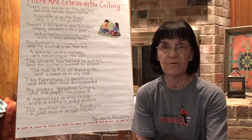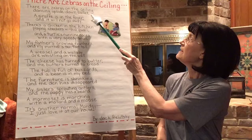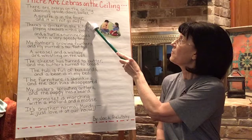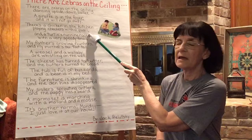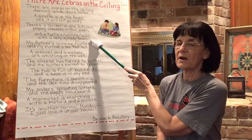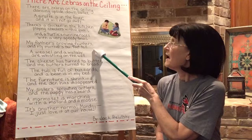There are zebras on the ceiling dancing upside down ballet. A giraffe is in the foyer and it will not go away. There's a chicken in the kitchen playing checkers with a quail, and a turtle's running races with a very speedy snail. My father's growing feathers and my mother's ten feet tall.